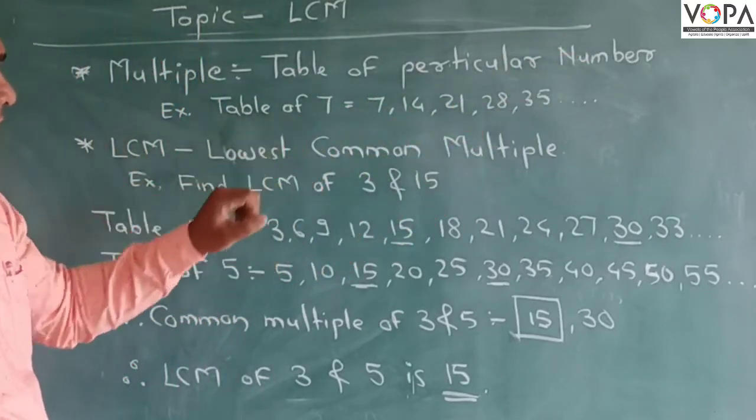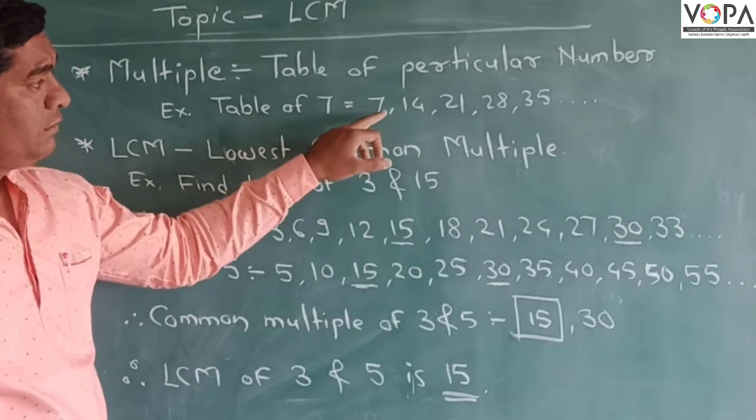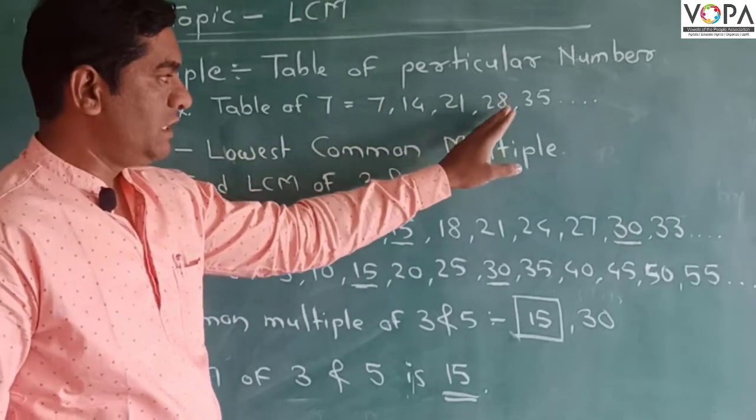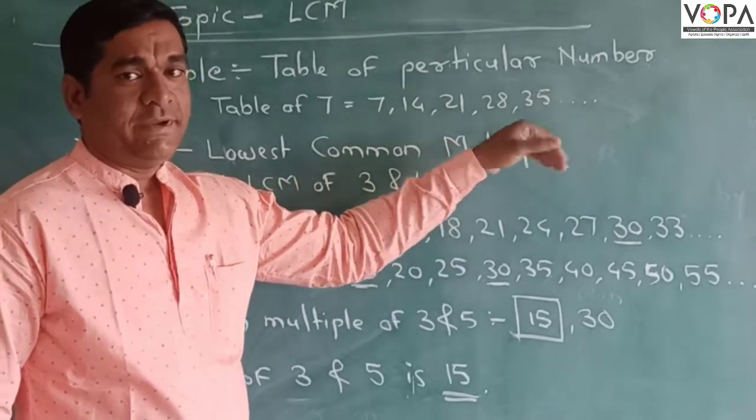For example, just like 7. So 7, 14, 21, 28, 35 and so on.